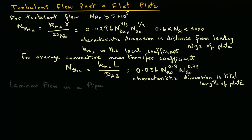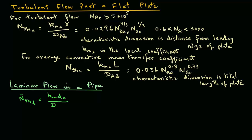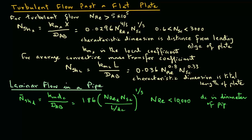Let's now look at laminar flow in a pipe. The dimensionless correlation is the Sherwood number N_SH,D, where D represents the characteristic dimension — the diameter. That equals K_M times D_C divided by D_AB equals 1.86 times the quantity (Reynolds number times Schmidt number divided by L over D_C) raised to power 1/3, where L is the length of the pipe and D_C is the inside diameter. This is valid for Reynolds number less than 10,000.